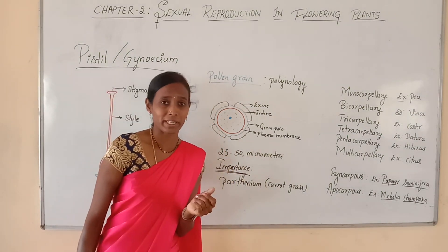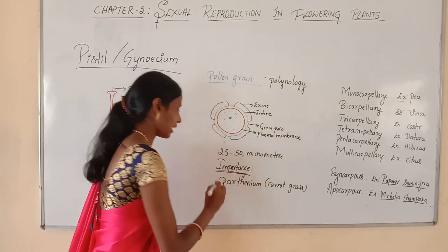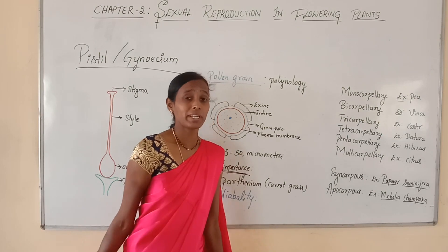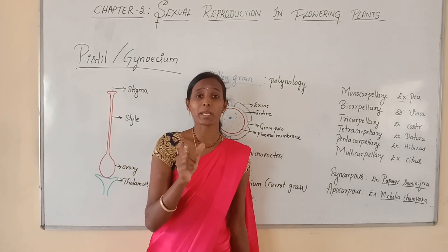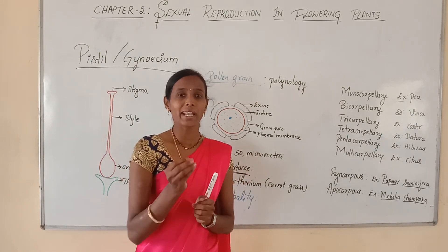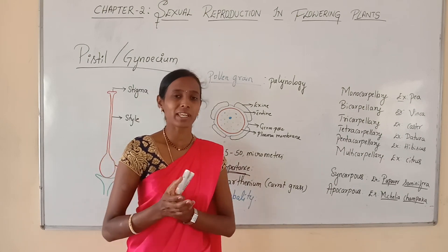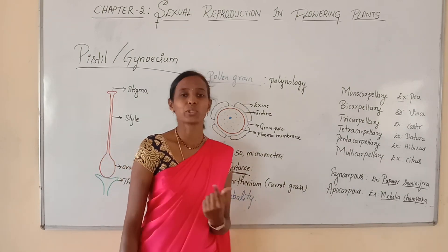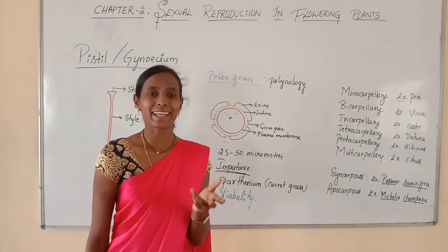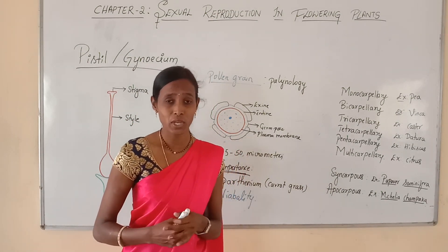What is the viability period? How long can pollen grains retain their viability is very important. The period of viability is greatly variable in different pollen grains, and to some extent it may depend on temperature and humidity. In some species like wheat and rice, pollen grains will lose their viability within 30 minutes of their release.